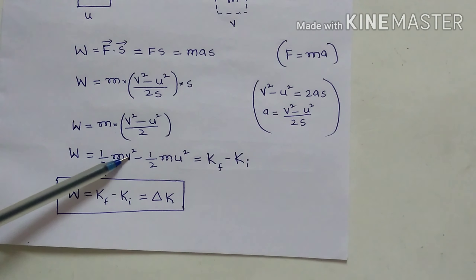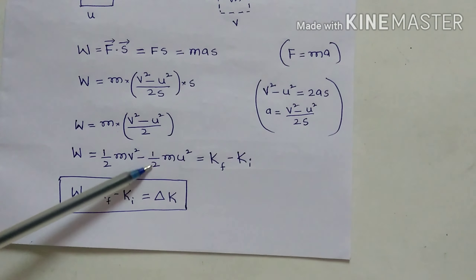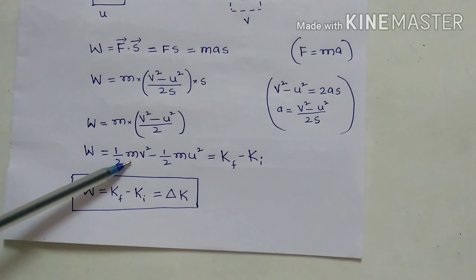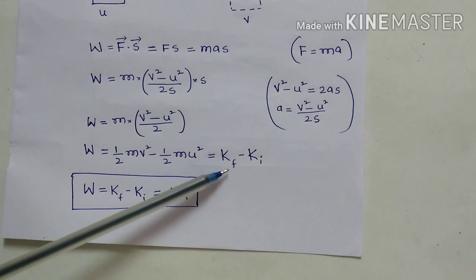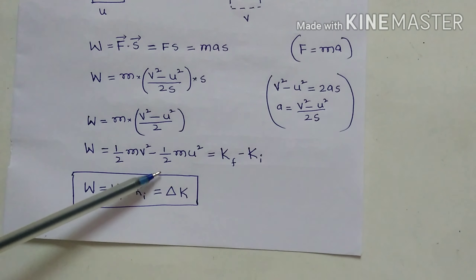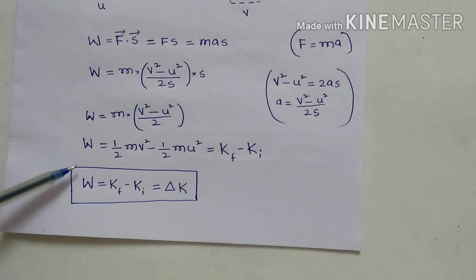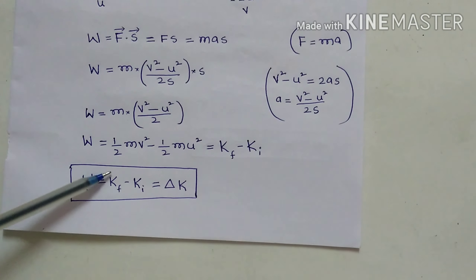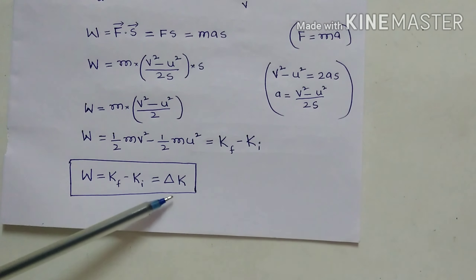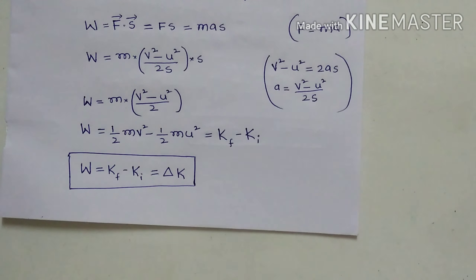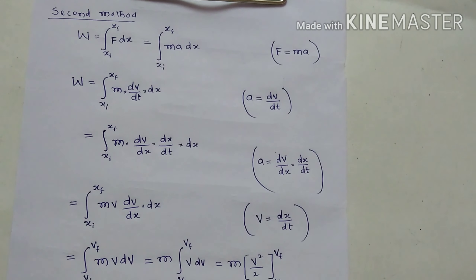So W = m(v² − u²) / 2 = ½mv² − ½mu². Here ½mv² is the final kinetic energy Kf and ½mu² is the initial kinetic energy Ki. Therefore W = Kf − Ki = ΔK. This is the work-kinetic energy theorem — first method proved.